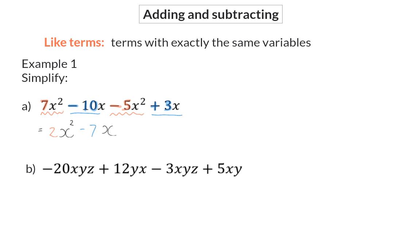In part B, again we have four terms. The first term and third term are like terms because both have the variable x times y times z. And if you look closely, you will see that the second term and the fourth term are also like terms because both of them have the variables x times y. This is why it is important to remember that in algebra, we prefer to always write variables in alphabetical order. Because if you do that with the second term, you will have 12xy, which makes it a like term with the fourth term.